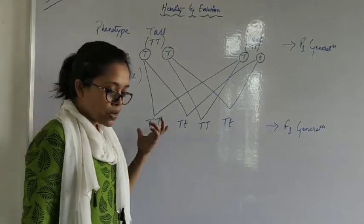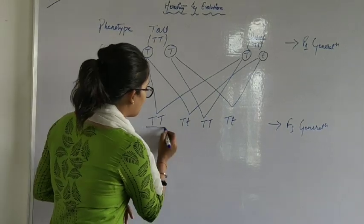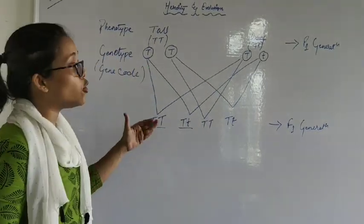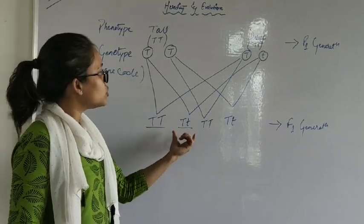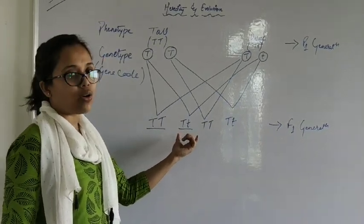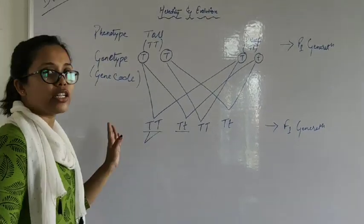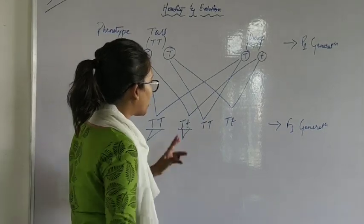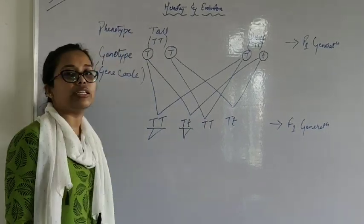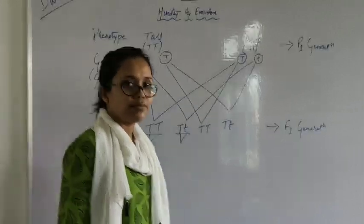So here we can see homozygous tall and heterozygous tall. This is homozygous, and this is heterozygous. Now why homozygous and why heterozygous? Two capital T means they have the same gene code—that is homozygous. Here you can see different gene codes, one capital one small—that means it is heterozygous. Their gene code is not similar. Thank you.